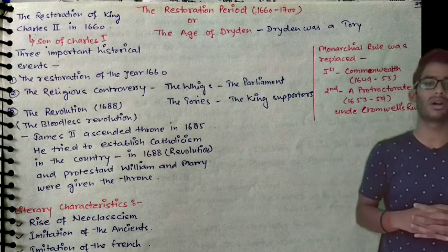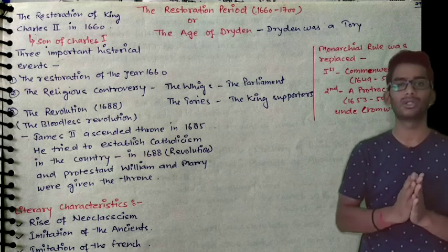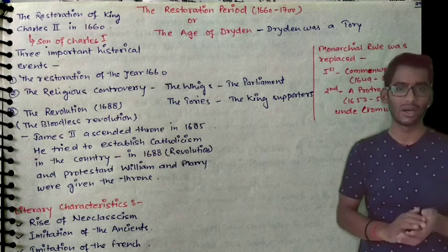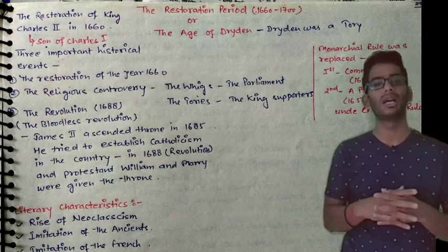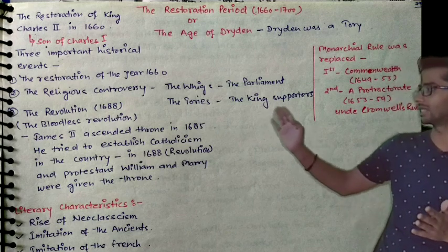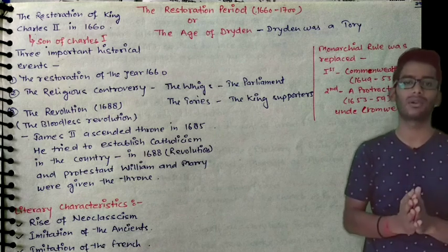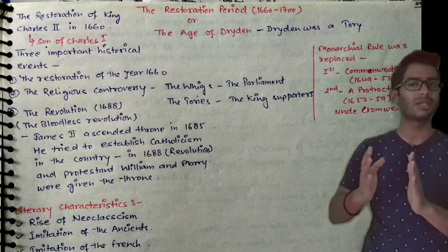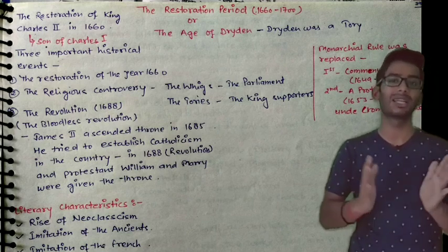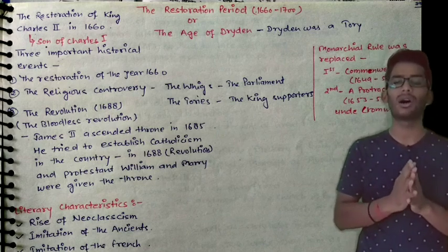First was the Restoration of the king in 1660 — how it happened, the restoration of King Charles II. Second is the religious controversy of that time. There were two main parties: the Whigs, who were supporting Parliament, and the Tories, who were supporters of the king — they wanted the king to remain in England.